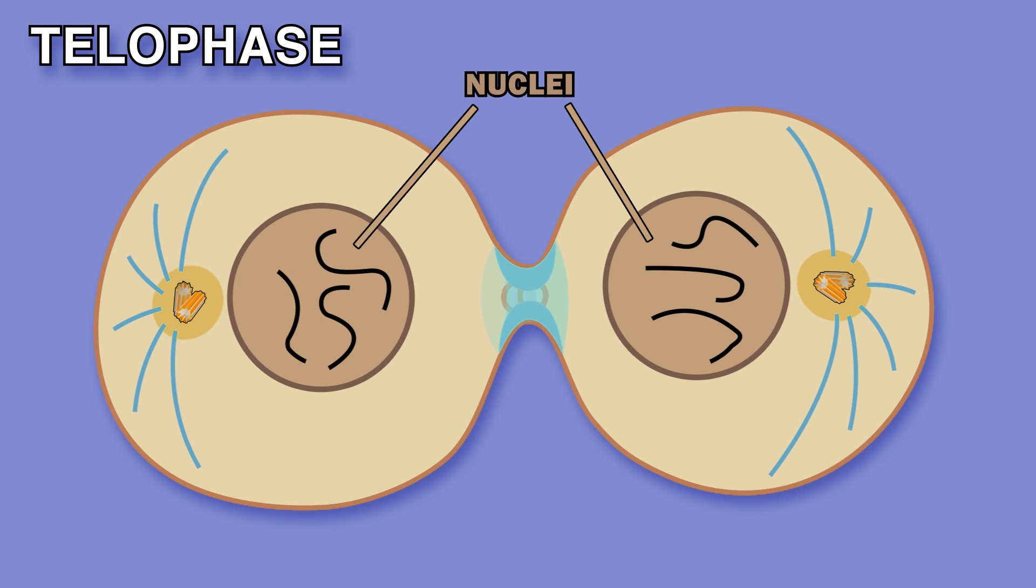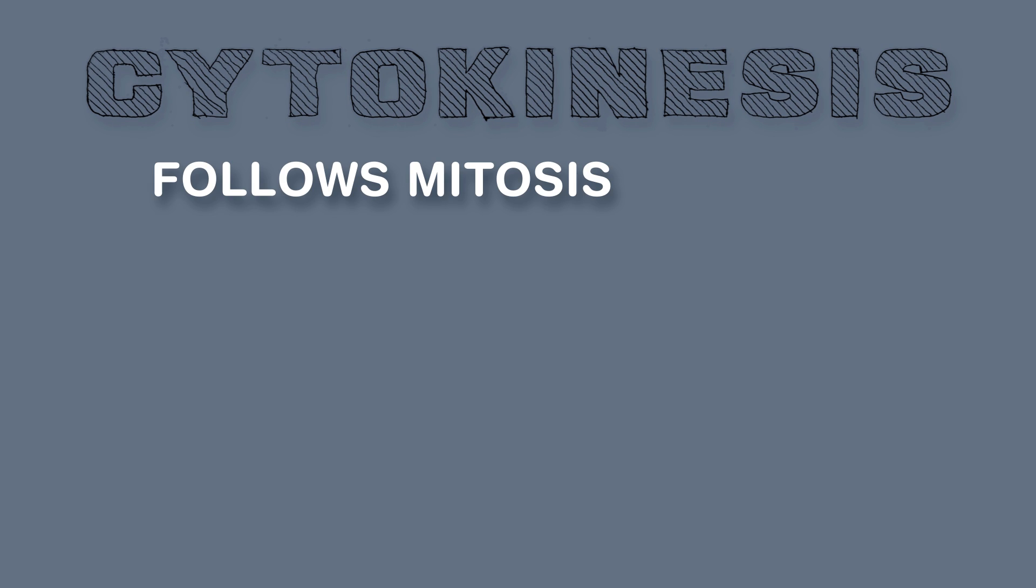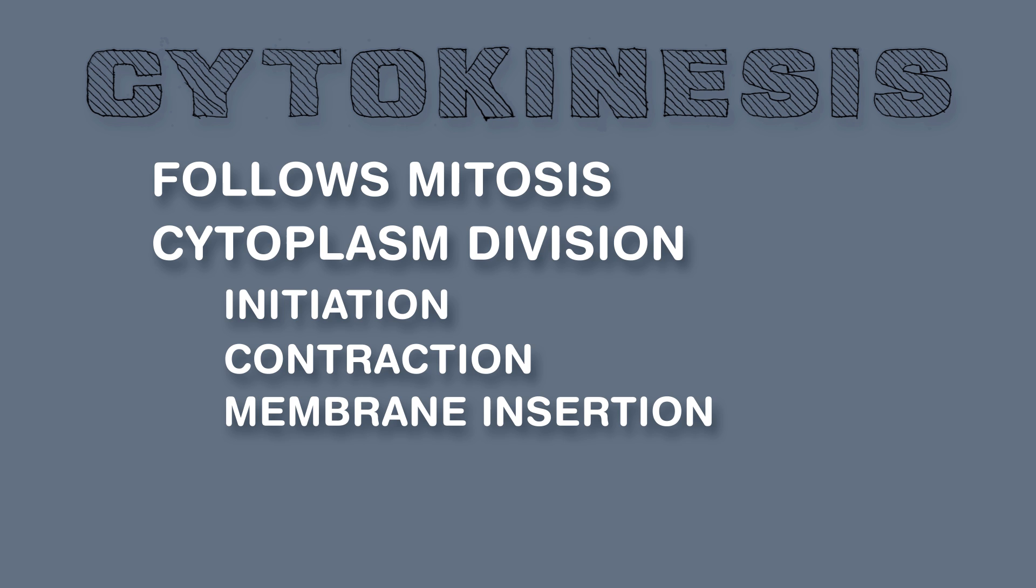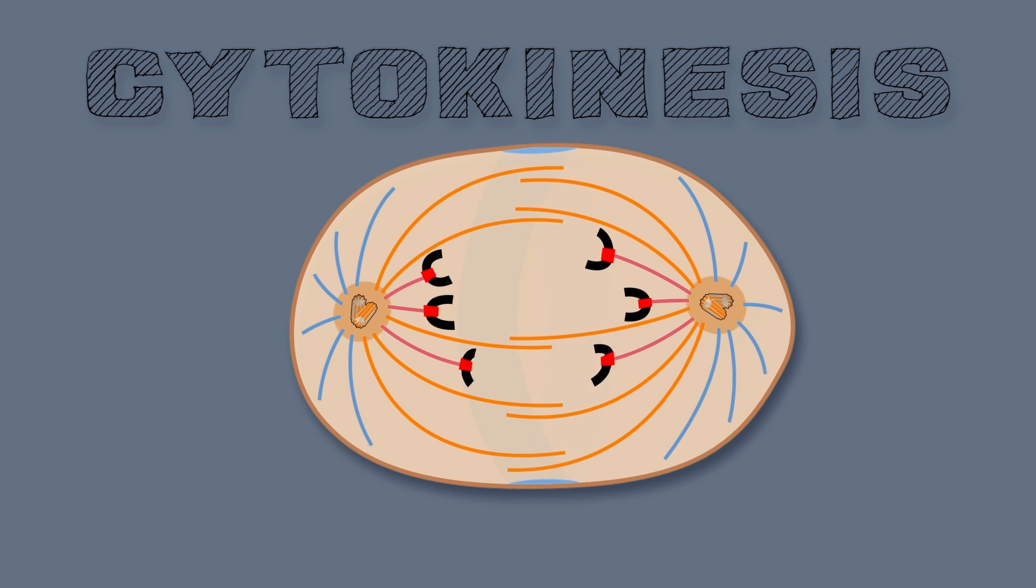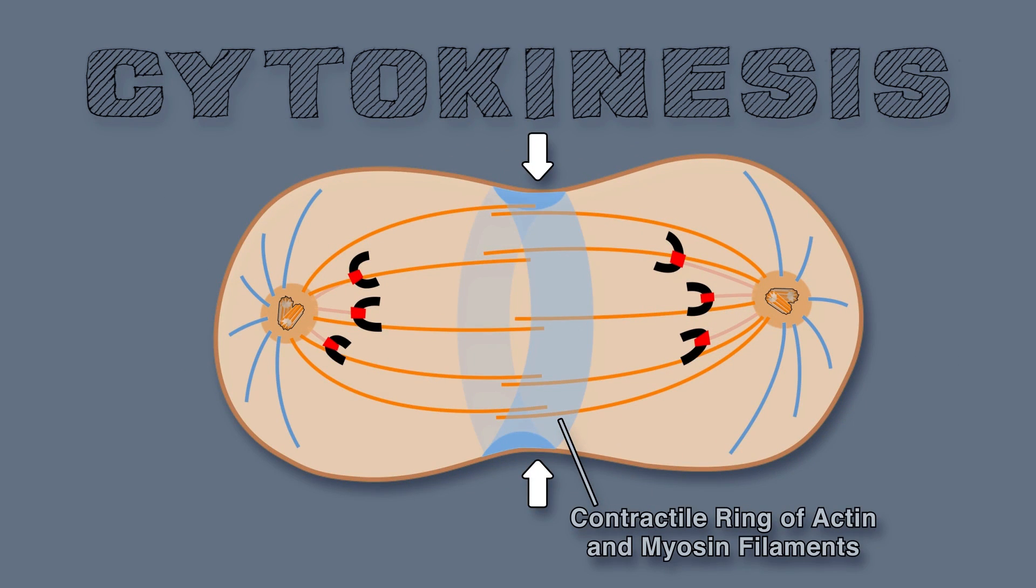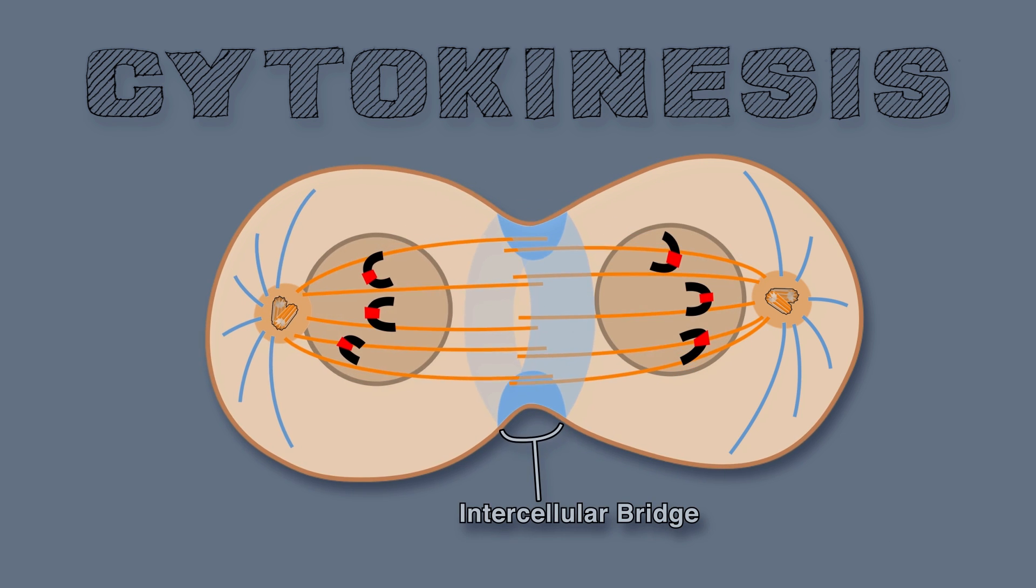Cytokinesis follows mitosis. It is cytoplasm division: initiation, contraction, membrane insertion, and completion. Actin and myosin filaments a deepening furrow create. This contractile ring gets cells to separate. As this ring contracts, an intercellular bridge takes shape.